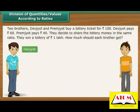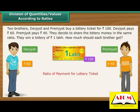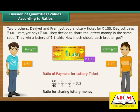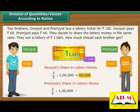Two brothers, Devjodh and Premjodh, buy a lottery ticket for Rs. 100. Devjodh pays Rs. 60 and Premjodh pays Rs. 40. They decide to share the lottery money in the same ratio. They win a lottery of Rs. 1 lakh. The ratio of their payments is 3 is to 2. Devjodh's share is Rs. 60,000 and Premjodh's share is Rs. 40,000.